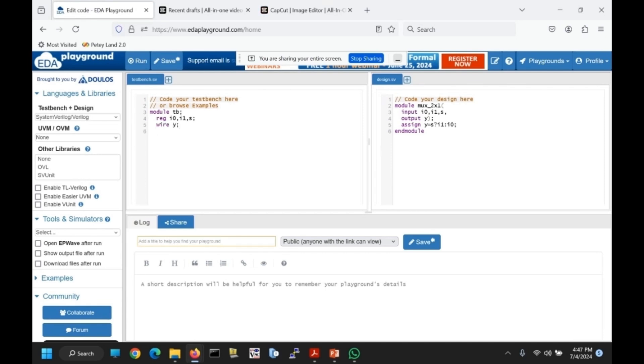Now we need to instantiate our design module to the test module. I0, I0, I1, s, y.